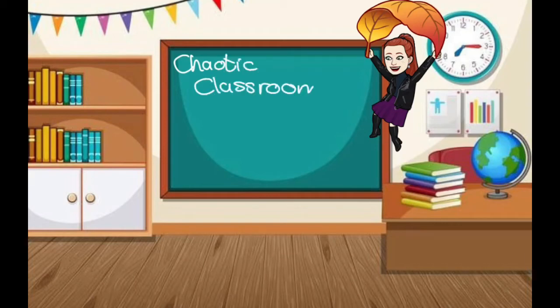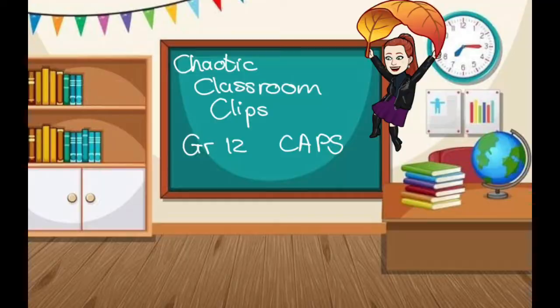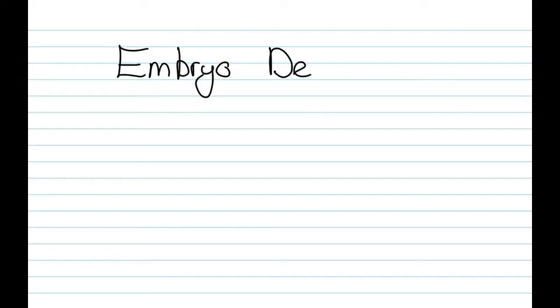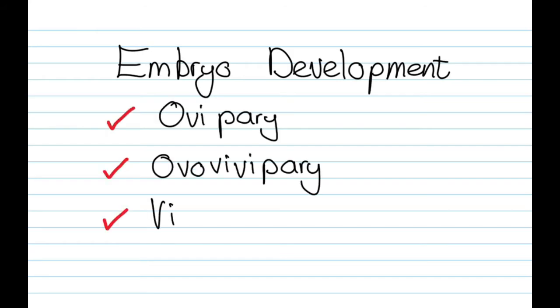Welcome to another chaotic classroom clip for grade 12s doing life sciences. This video is going to deal with embryonic development, and when you talk about embryonic development, there are three different types: there's ovipary, ovovivipary, and vivipary.